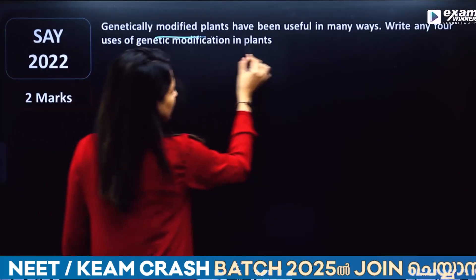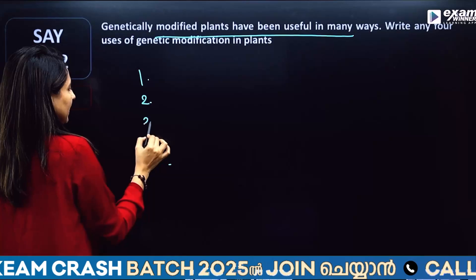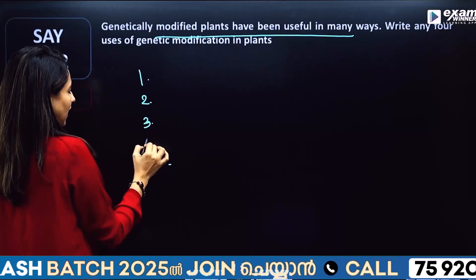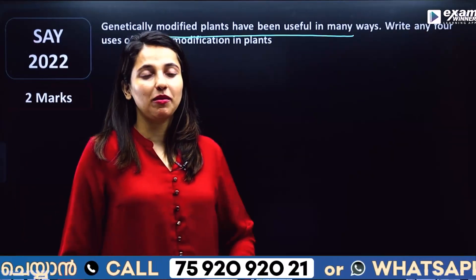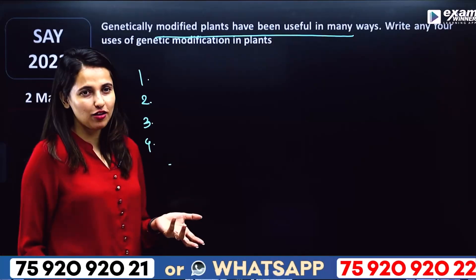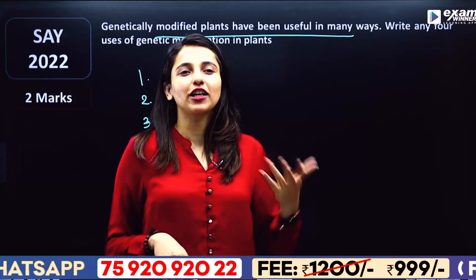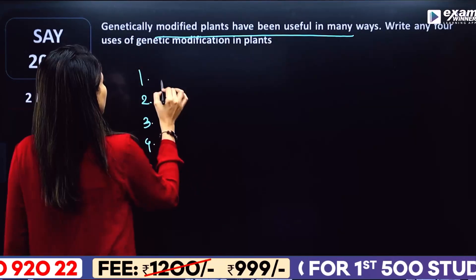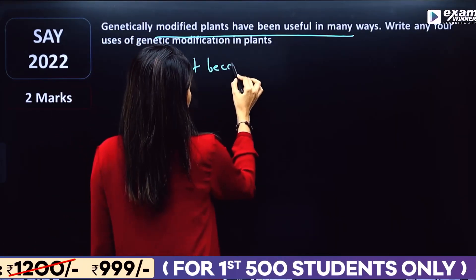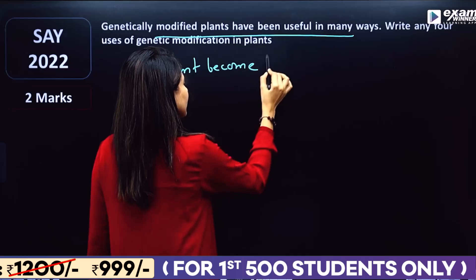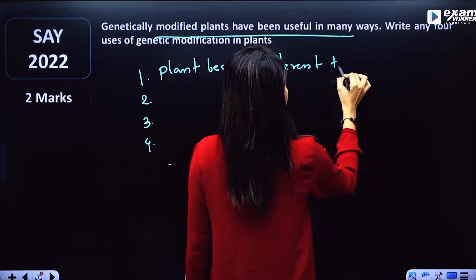Genetically modified plants have been useful in many ways — we call them GMO plants. One use: the plant becomes tolerant to abiotic stresses.